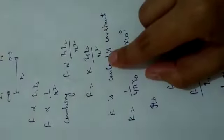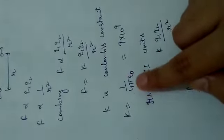It is called Coulomb's constant. Its value is 1 by 4 pi epsilon naught, equal to 9 times 10 to the power 9.